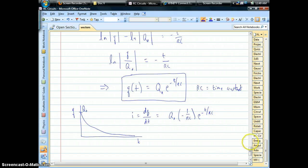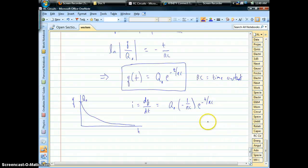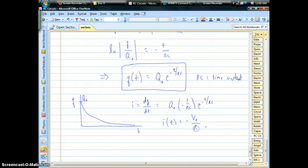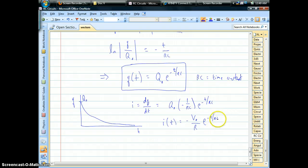So this too also exponentially decays. We could clean this up and rewrite it a little bit. Initial charge divided by capacitance would be whatever the initial voltage of your capacitor is, divided by resistance. That's cool. That's Ohm's law. That's current. And then we have our exponential also at the same time constant.